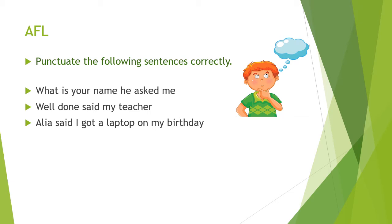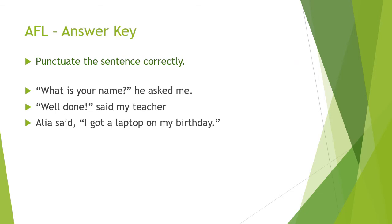Here is your AFL question. Try to do this — punctuate the following sentences correctly: 'What is your name?' he asked me. 'Well done,' said my teacher. Alia said, 'I got a laptop on my birthday.' Now let's check the answers. First one: 'What is your name?' — since it is direct speech, we put an inverted comma at the beginning, don't forget to write the capital letter, and since it is a question, we put a question mark and then close the sentence with the inverted comma.